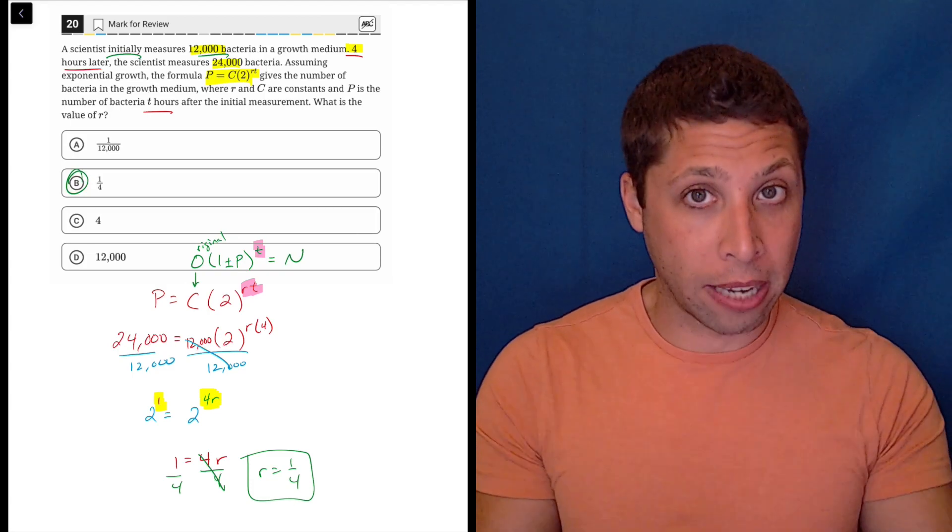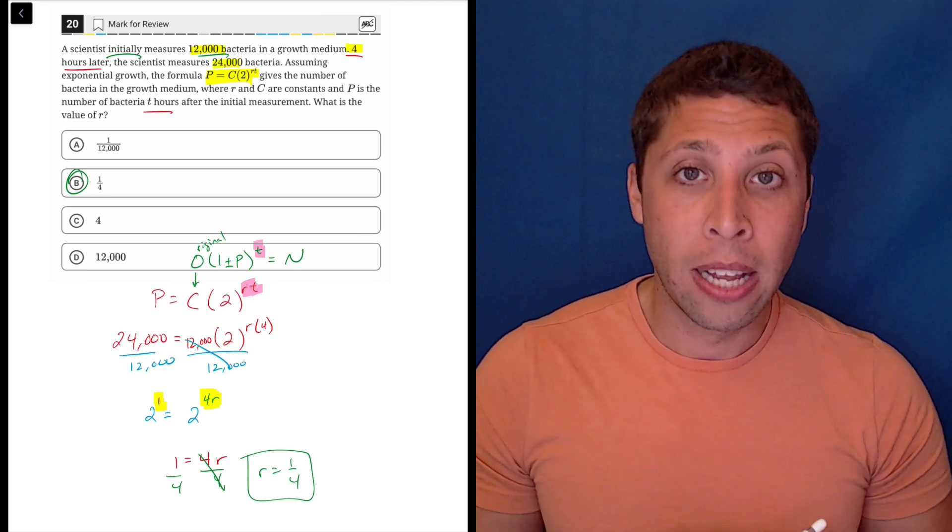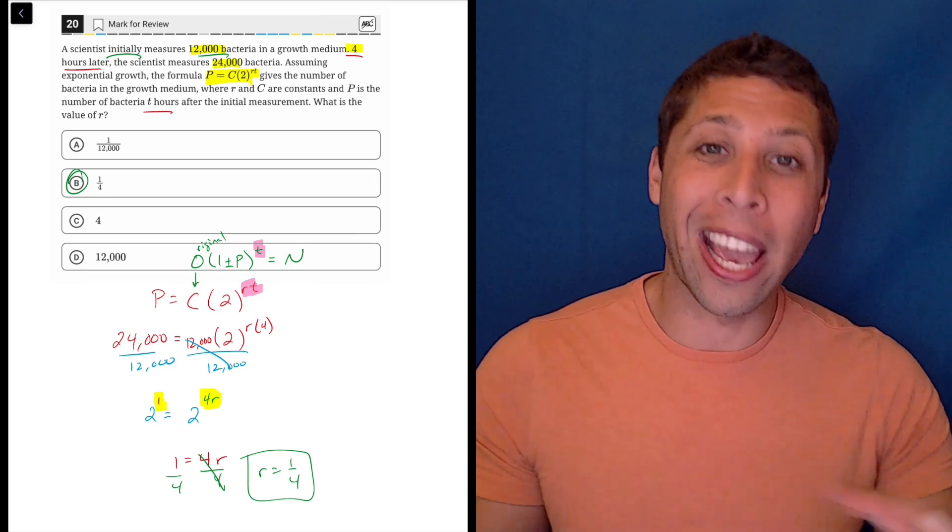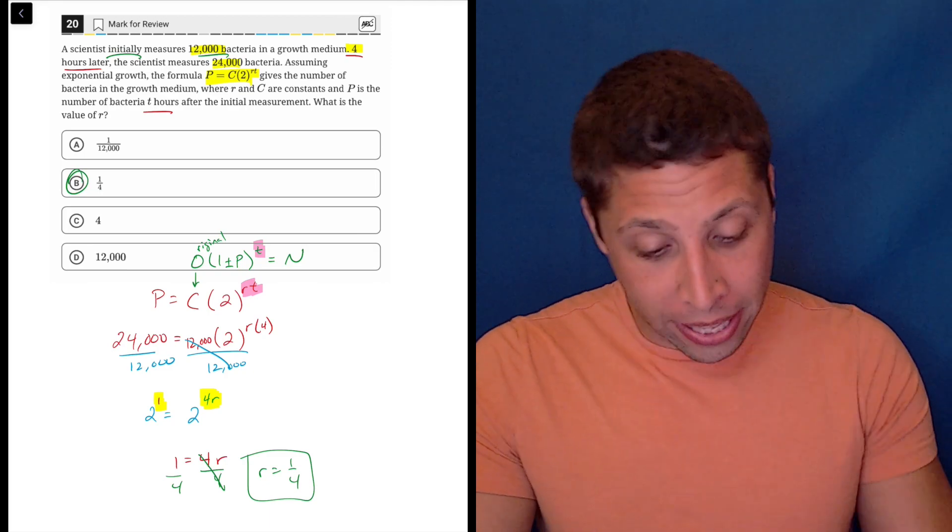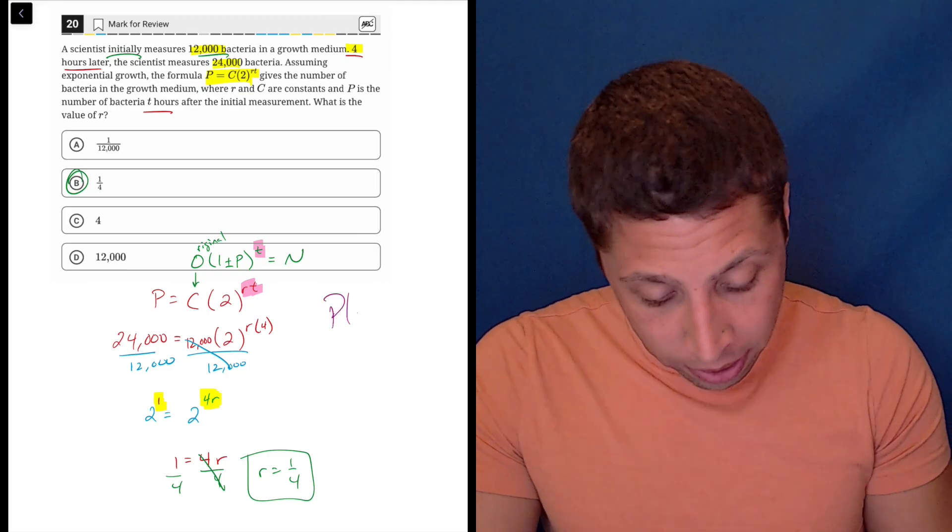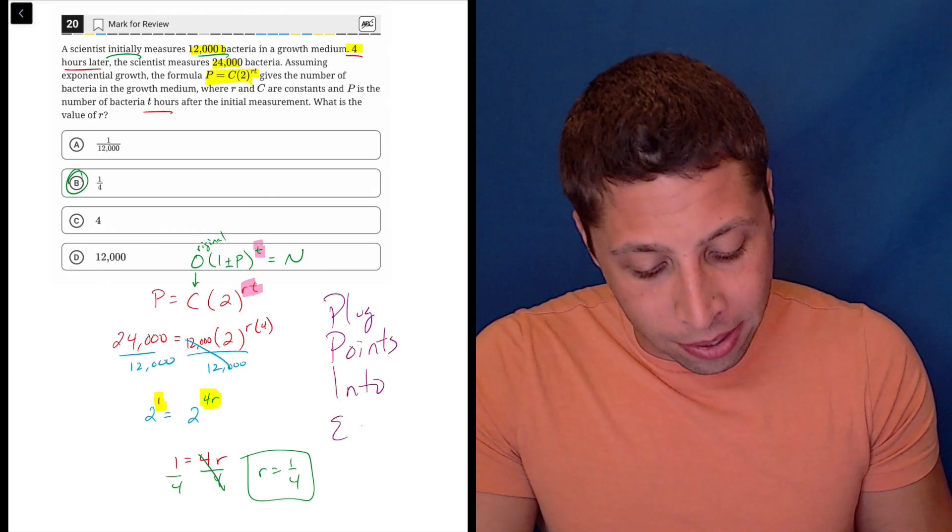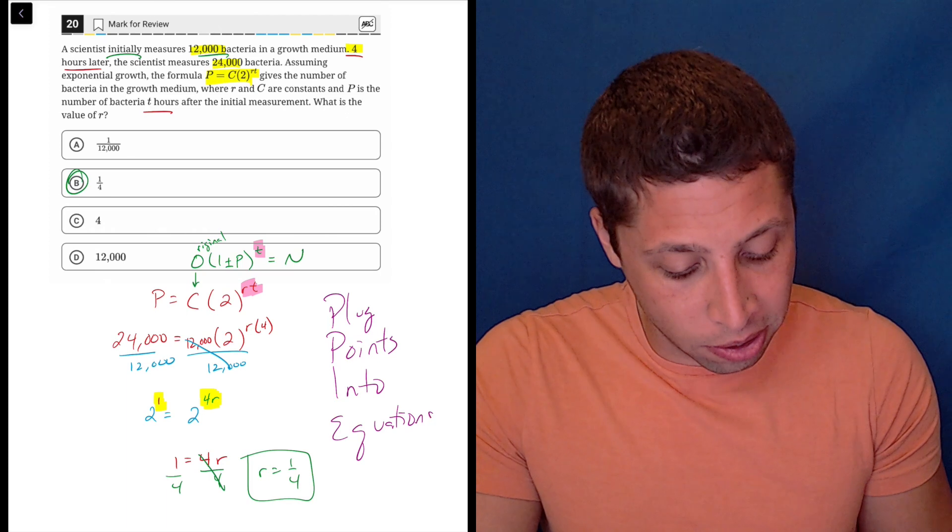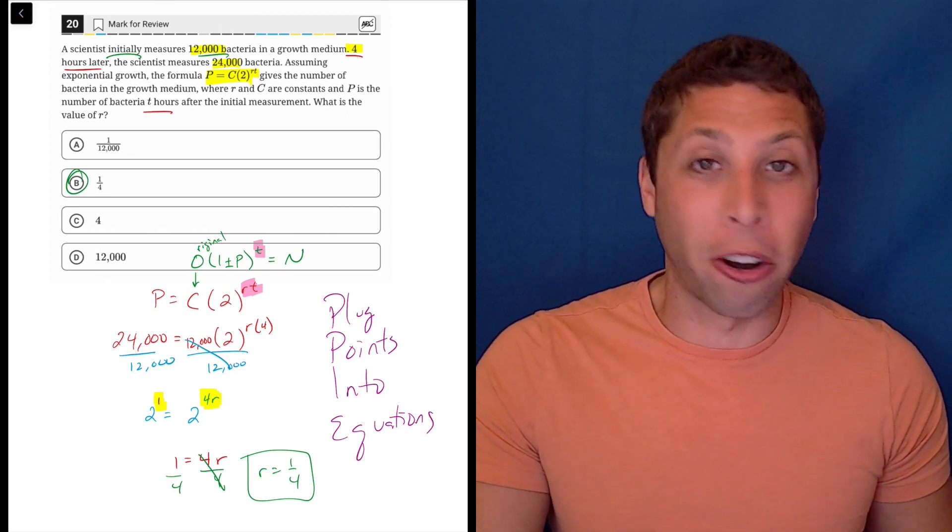But everything else follows the normal way we think about exponentials. We have a starting value, an exponent, and a resulting value. We want to get comfortable with that formula, so when they twist it up, we're okay untwisting it and getting back to that normal place. At the end of the day, this really was a simple example of my favorite strategy: plug points into equations. If you can keep that in mind, you won't panic, and you'll be able to get this hard question right.